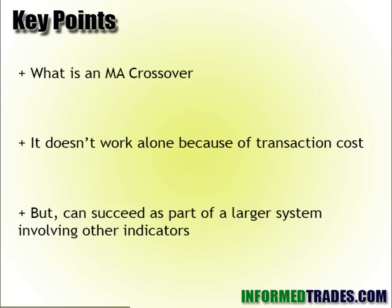The key points: first we'll start with what is the moving average crossover. It doesn't work alone because of transaction costs — like RSI above 70 or below 30, all these very common ideas won't work once you factor in transaction costs. With that said, they can succeed as part of a larger system. If you use more than just the simple indicator, more than just the moving average crossover, more than just RSI above 70 or below 30, and factor in other indicators, then you can filter out a lot of opportunities that aren't that great. You'll reduce your drawdown, focus on just the right opportunities, and that is how you can sort of outperform.